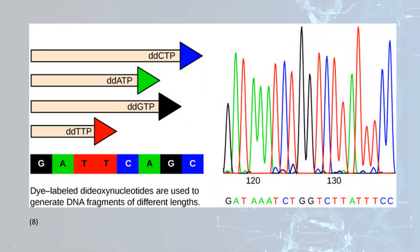Shotgun sequencing and paired-end sequencing involve copies of a DNA fragment being cut randomly into smaller pieces, which are sequenced using the chain sequencing method. Fragments are analyzed by computer to find where sequences overlap, matching overlapping sequences at the end of each fragment to enable sequencing of the full DNA. A set of sequences assembled by overlapping sequences is called a contig.